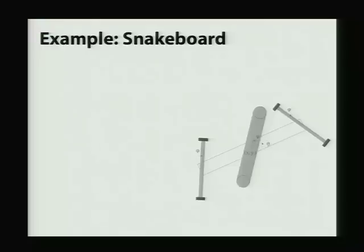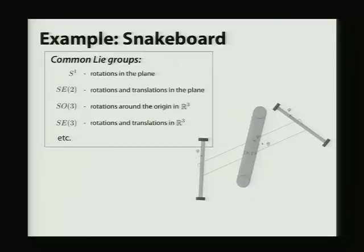So you might say, this Lie group representation sounds great, but if I have some specific vehicle, I have no idea what Lie group to use to represent my pose. So the way you go about this is you go grab a list of common Lie groups on Wikipedia and you say, okay, what is my vehicle doing?